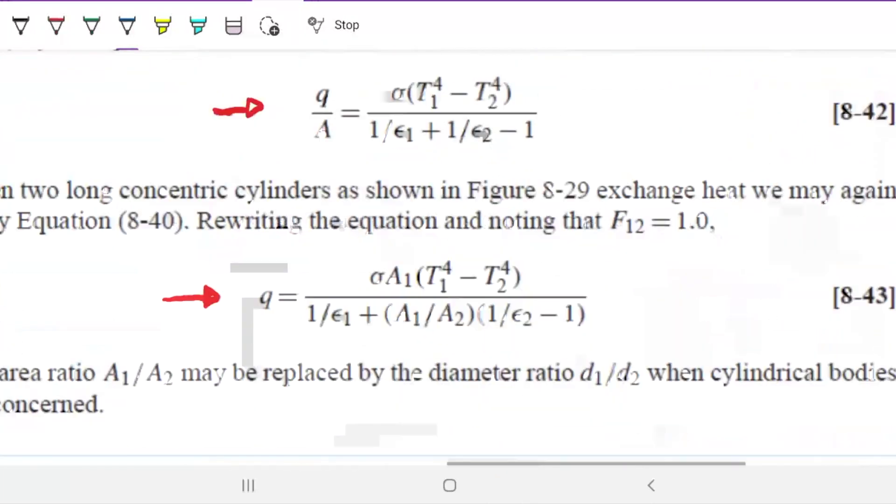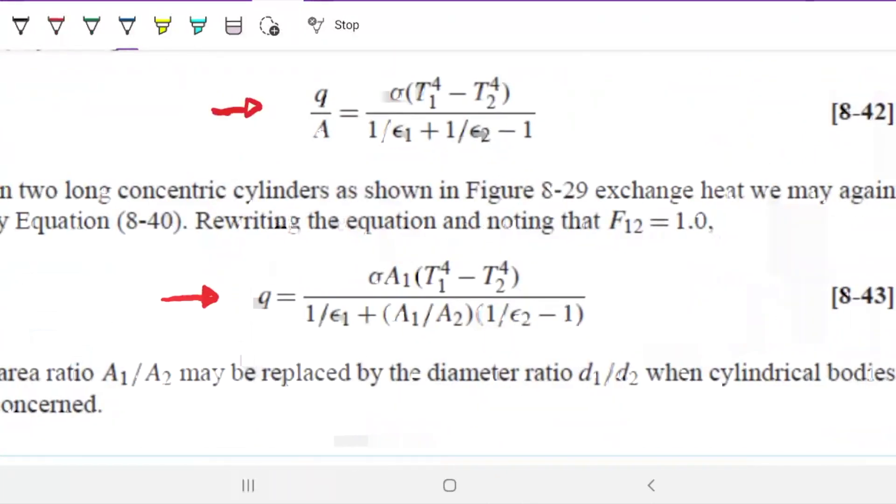So what is this equation telling us? It's telling us that the energy equals Stefan Boltzmann constant, the area of the one who has the greatest energy, temperature of the one with the greatest energy, minus the temperature of the one with the smallest energy, divided by one over the emissivity of the one with the greatest energy, plus the ratio of the area between the greatest energy and the smallest energy, times one over the emissivity of the one with the smallest energy minus one.